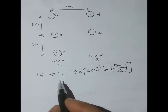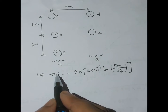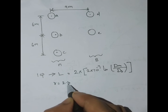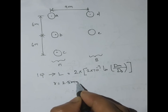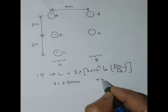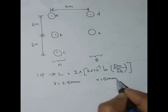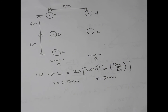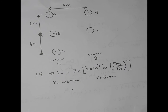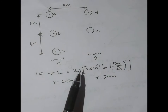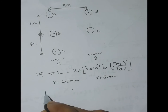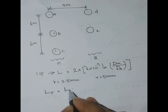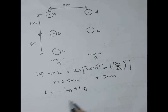Here the radius is different for the two phases. For the go conductors, r = 2.5 mm, and for the return conductors, r = 5 mm. Because the radius is different, it is not possible to find inductance using the simple formula directly. So what we have to do is find total inductance as La plus Lb.